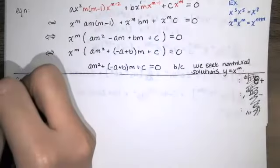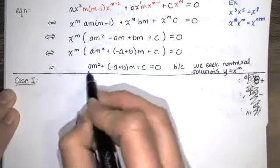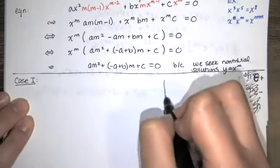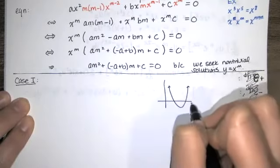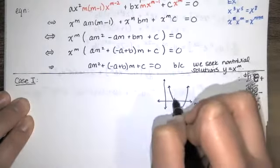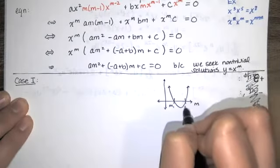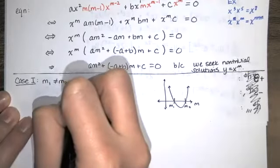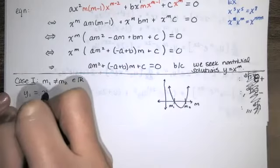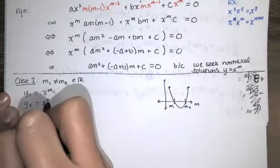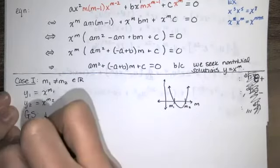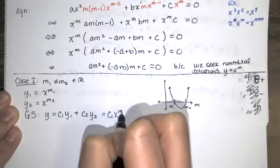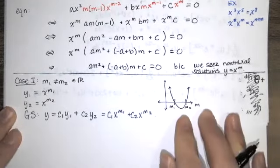Case 1: The quadratic has two distinct real roots m1 and m2. In this case, we immediately get two solutions: x to the m1 and x to the m2. The general solution for a second-order differential equation is y equals c1 times x to the m1 plus c2 times x to the m2.